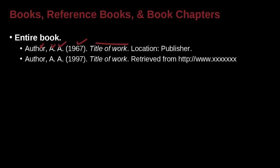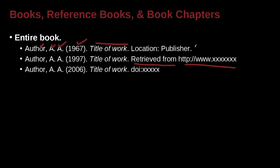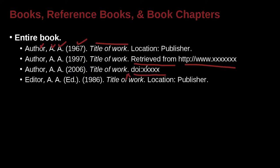Here's an example of an online book using a URL. It's very similar, only instead of a location and publisher, we have 'retrieved from' followed by the URL. Another way is the same approach, only at the end we add DOI — the document object identifier — rather than the URL or city and publisher's name. So there are three different ways you can do that.